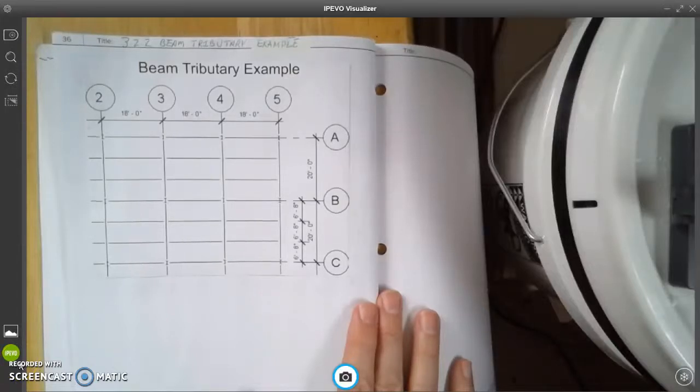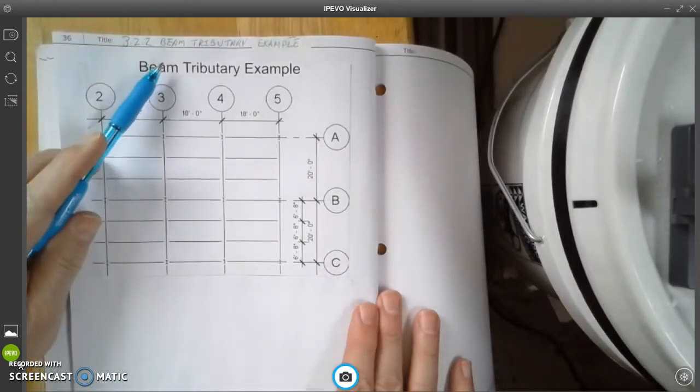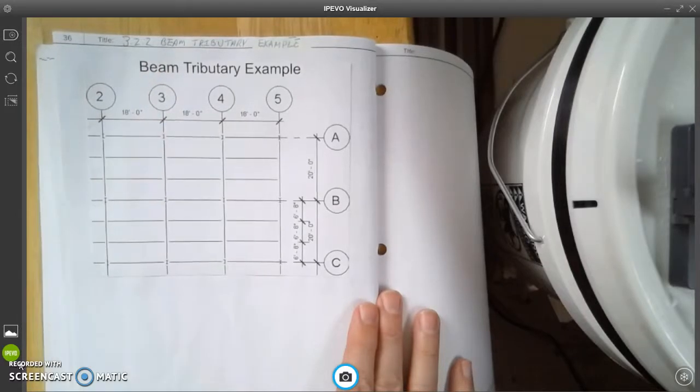Now we're going to learn about the tributary area. In your engineering notebook, I want you to find this page that has the title Beam Tributary Example and glue it into your engineering notebook. At the top, you're going to put 3.2.2 Beam Tributary Example. So I'm going to pause and let you catch up with me and then we're going to talk about this.